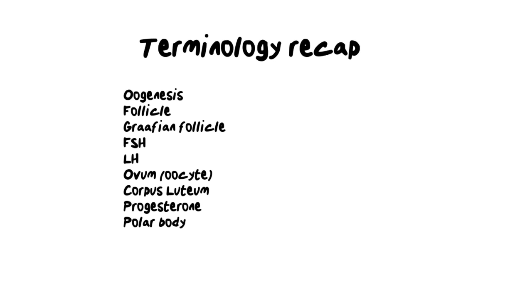Let's do a terminology recap. Oogenesis is the production of ovum — it is where we go through meiosis, take a diploid cell, and form haploid cells. How it's slightly different to spermatogenesis is that we take one cell and still produce four, but only one of the four is actually used to form an egg cell. A follicle is essentially a cell that is on its way to becoming an ovum — it's almost like an underdeveloped cell.